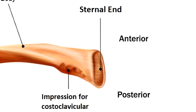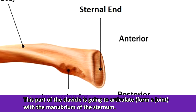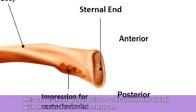On the medial side of the clavicle, we have the sternal end. Medial means toward the midline of the body, and the sternum is the breastbone. This part of the clavicle is going to articulate with the manubrium of the sternum.